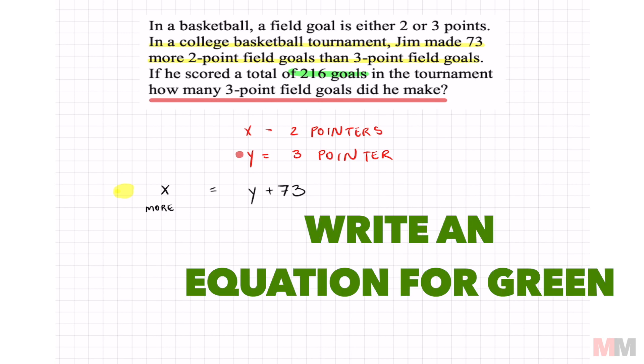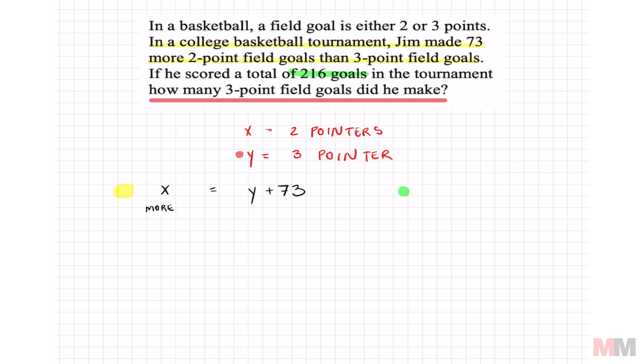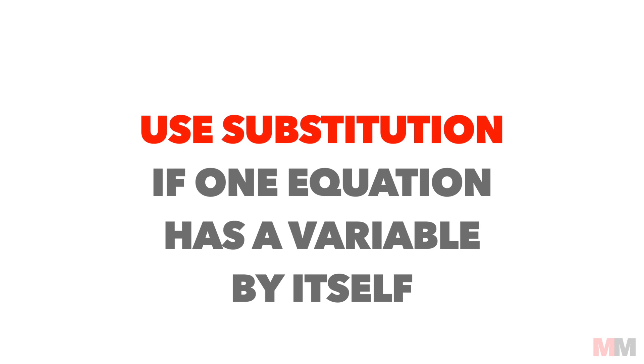Now let's write our green equation. All it says is that he scored 216 goals or I think they meant to put points. So how does he score his points? Two times the amount of two-point field goals he made plus three times the amount of three-point field goals he made will equal 216 goals or points. This right here calculates his total. Now we got two equations and it's the easy part.